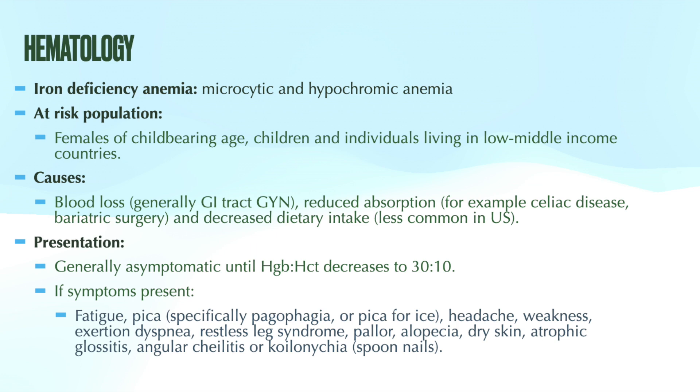However, there is a caveat: complex patients may require more testing. Although a ferritin less than 30 is diagnostic for iron deficiency anemia, a ferritin in the normal range does not exclude iron deficiency anemia. A patient could have a normal ferritin and still have iron deficiency anemia — ferritin confirms the diagnosis but cannot rule it out.